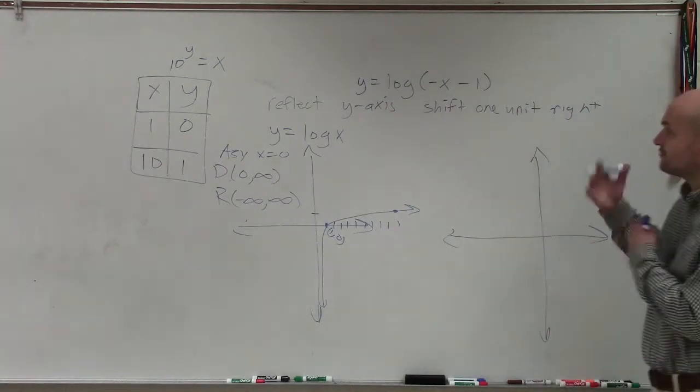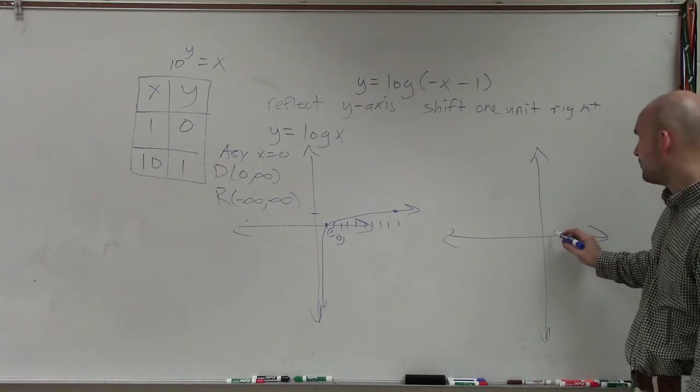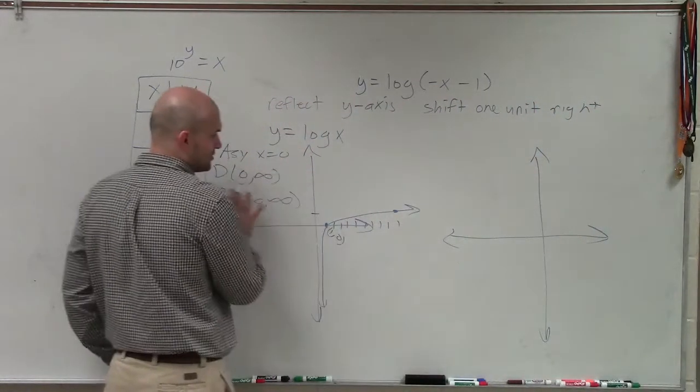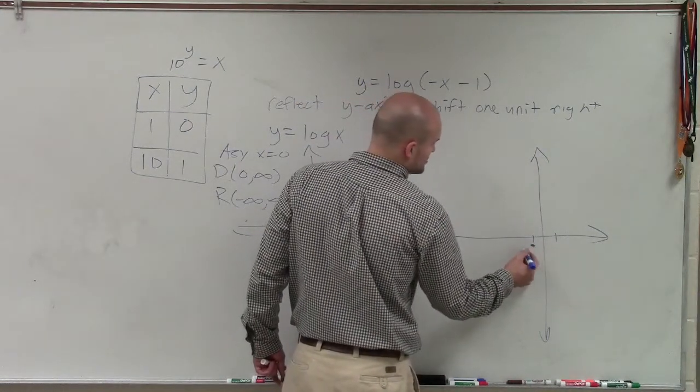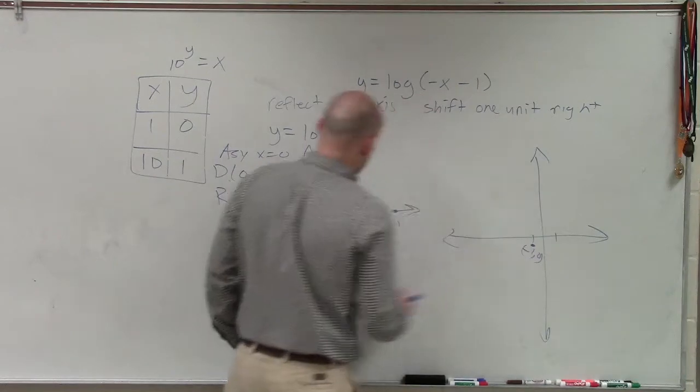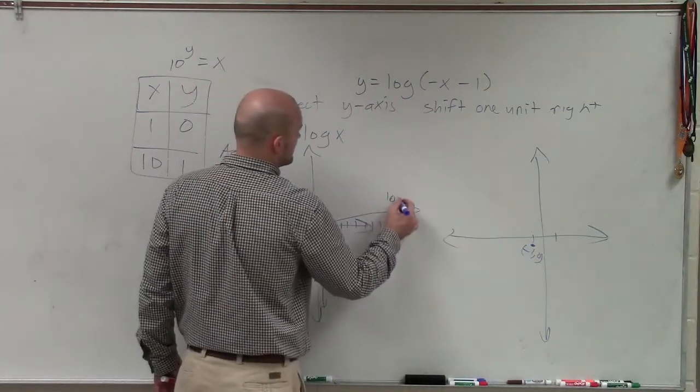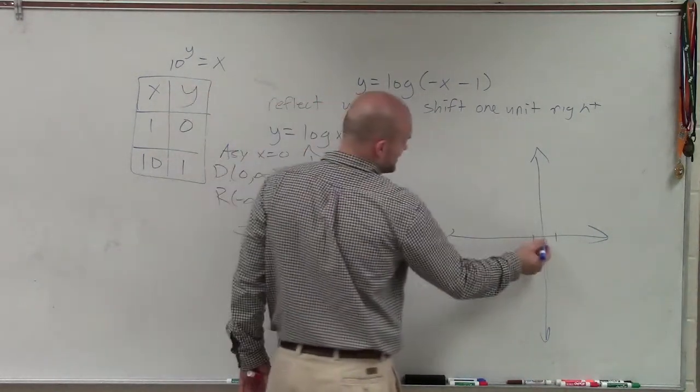So if I apply my reflection and reflect across the y-axis, here's my point at 1 comma 0. If I reflect this over the y-axis, instead of going over 1, I'm now going to go to the left one. So then I have negative 1, 0.